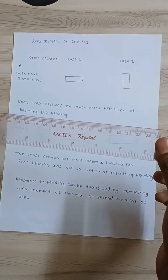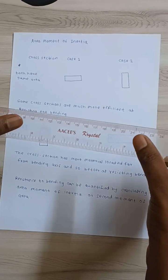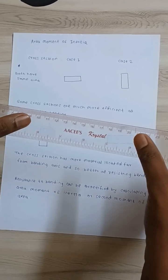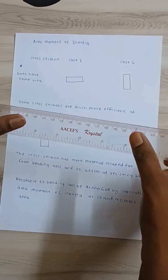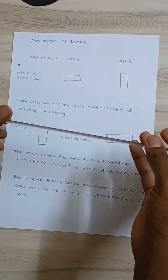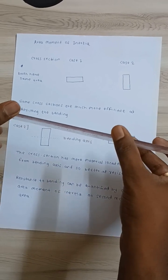Let's understand moment of inertia by using this scale. If I want to bend this scale, you can see I can easily bend this. And if I turn it 90 degrees and try to bend it, it is very difficult.